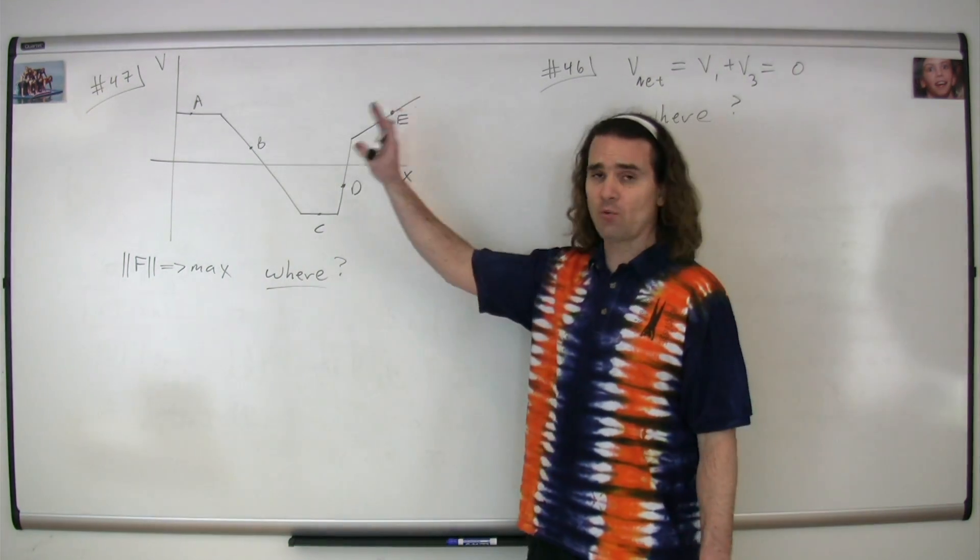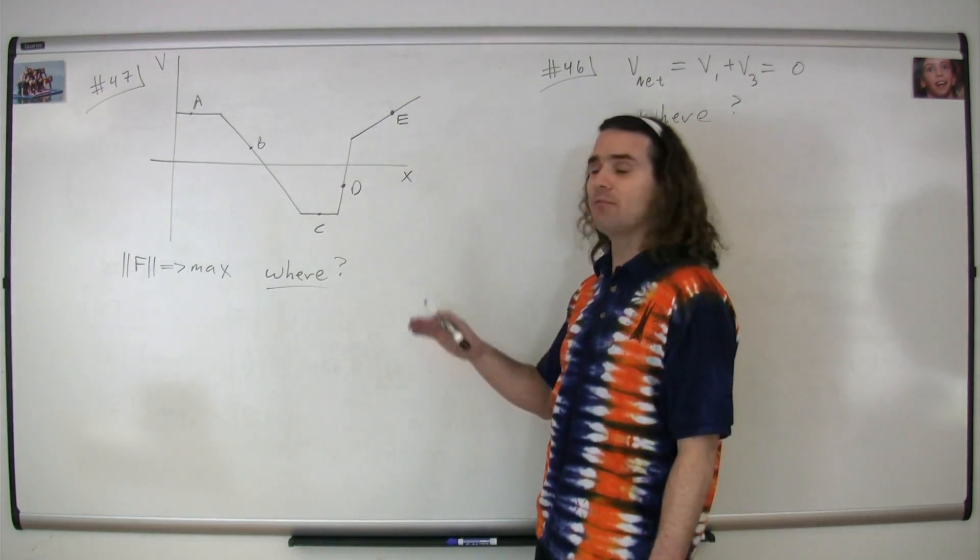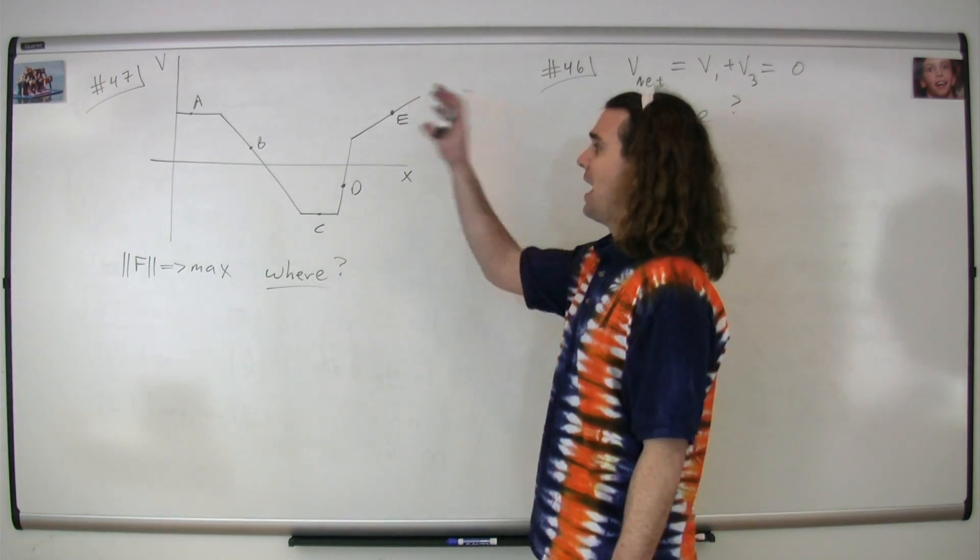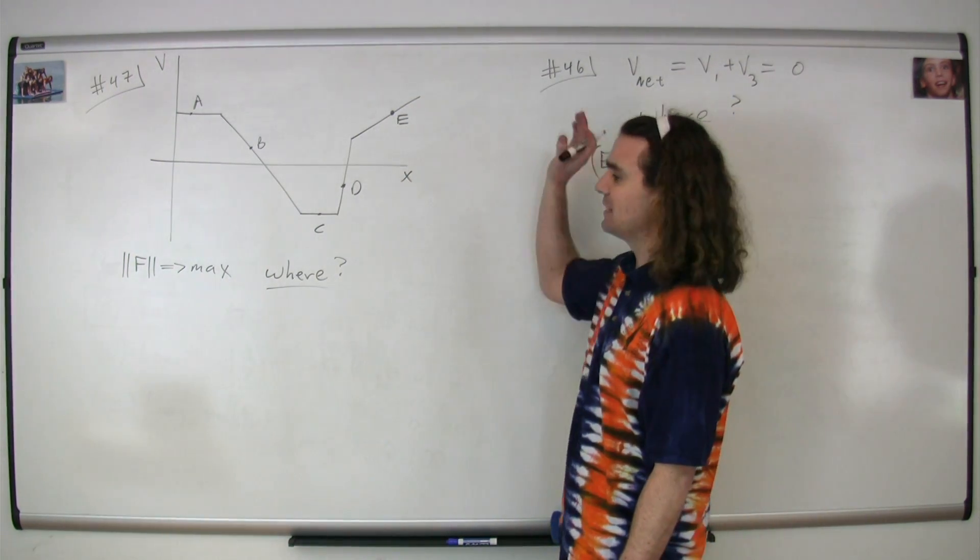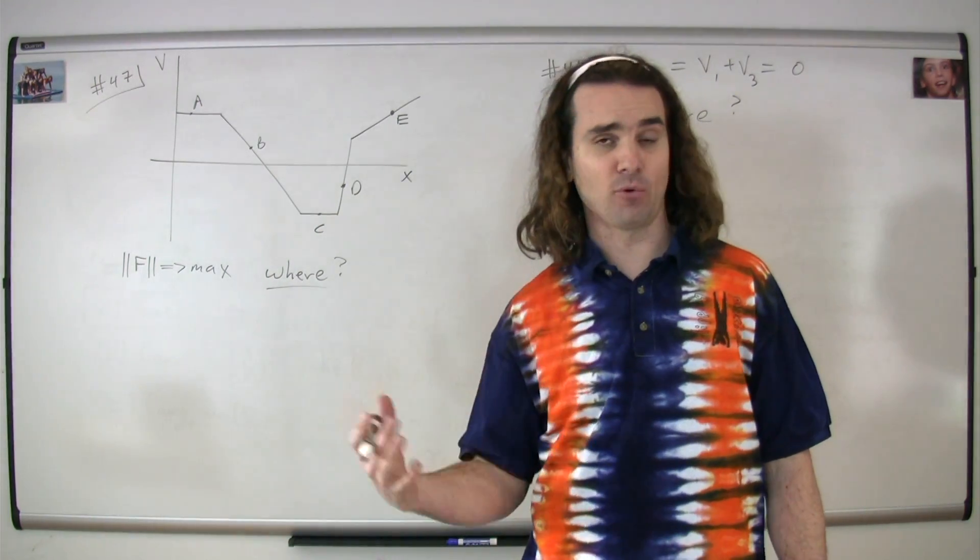Question number 47 provides us with a graph of the electric potential as a function of position and asks if we place a charged particle at various locations A, B, C, D, and E, where would it have the maximum magnitude electric force?